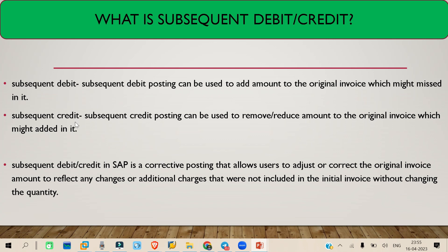Overall, both subsequent debit and credit documents are used to either add or reduce charges on an originally posted invoice. Debit means you want to add some price; credit means you want to reduce some price. I believe this concept is clear. That's it for today — we'll meet again tomorrow with more topics. Till then, bye bye and take care.